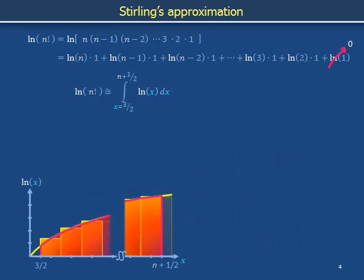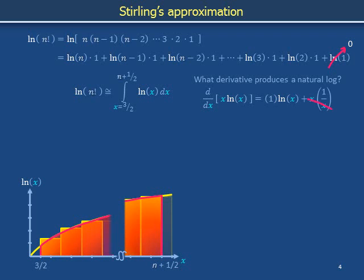In order to express this integral in terms of functions we have already encountered, we seek a mathematical object whose derivative is the natural log. As a first guess, we consider the product of x and the natural log of x. To take the derivative of this product, we write down the derivative of x — which is 1 — multiplied by the natural log of x, and then add x multiplied by the derivative of the natural log of x, which is 1 over x. Canceling x upstairs and downstairs, the derivative of x times natural log of x equals natural log of x plus 1.